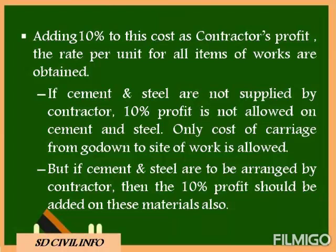There are two cases regarding cement and steel. If cement and steel are not supplied by the contractor, the contractor is not investing any money on these, and therefore ten percent profit is not allowed on cement and steel. The cost of carriage of cement and steel from the godown to the site should be allowed to the contractor. But if cement and steel are to be arranged by the contractor himself, then ten percent profit should be added on these materials also.